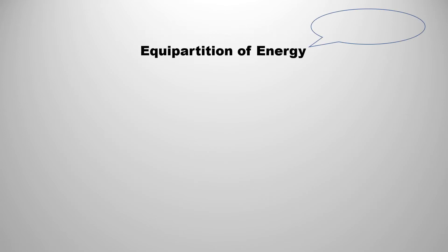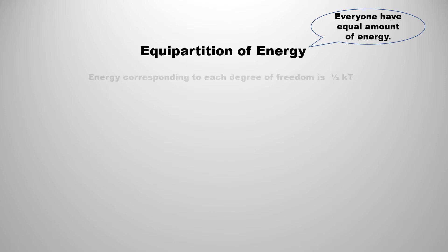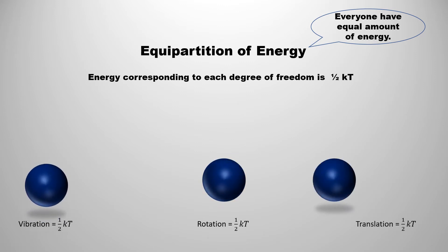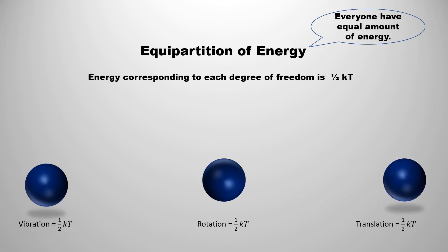To understand this, Rayleigh and Jeans took the help of classical statistics. According to the Equipartition of Energy Theorem of classical statistics, each degree of freedom of the system corresponds to the same energy: half kT. For example, if a molecule has vibrations and rotations, then the energy corresponding to each degree of freedom will be half kT. Similarly, if molecules also have translational motion, then this degree of freedom also corresponds to half kT energy.